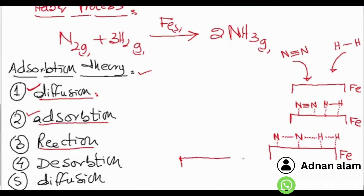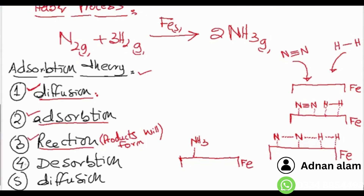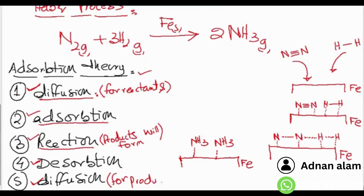Step 4 — desorption: products formed (NH₃) start to detach from the catalyst surface. Desorption means detachment from the surface. Step 5 — diffusion: the product molecules (NH₃) diffuse away from the surface of the catalyst. So the first diffusion step is for reactants moving towards the surface, and the last diffusion step is for products moving away.